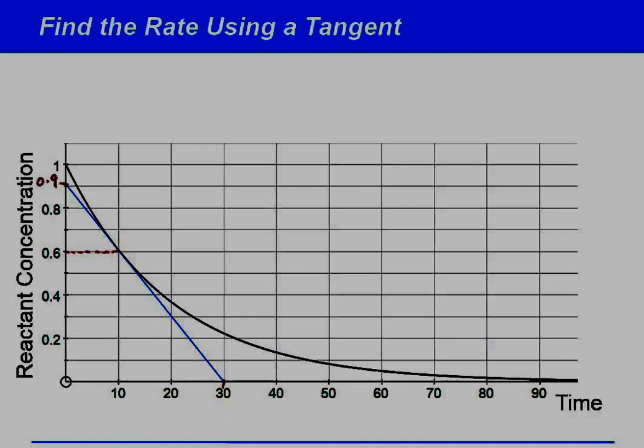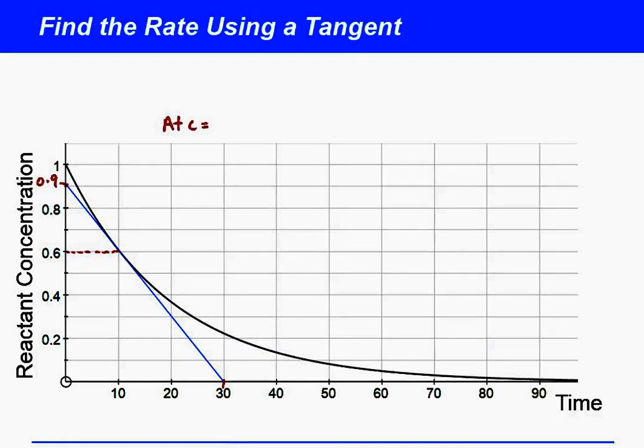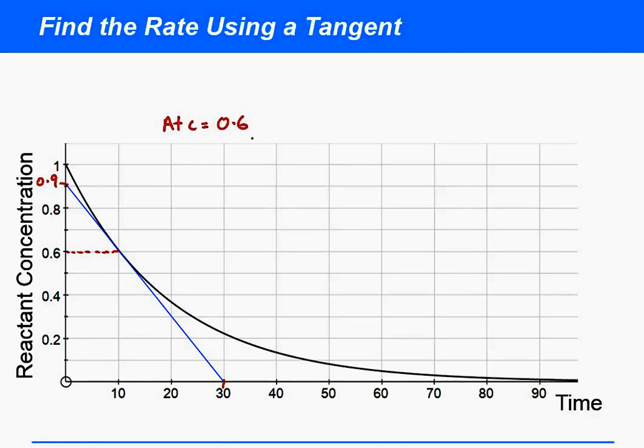So at concentration equals 0.6, the rate is change in concentration over change in time with a negative sign to make sure it's positive. And so in this case we've effectively got a change in concentration of 0.9 and a time change of 30 seconds, and so what we've got here is a rate of 0.03 in this particular case.